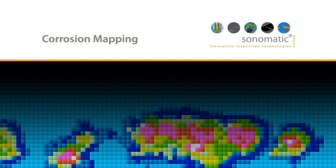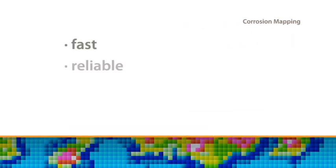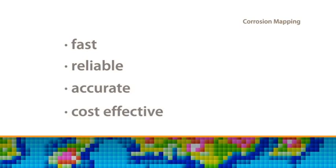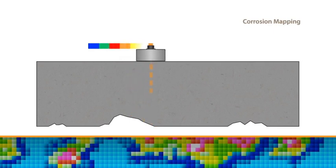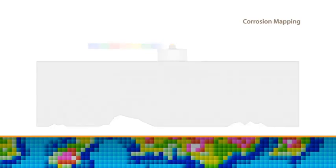Determining whether corrosion exists and how extensive it is inside pipes or vessels is paramount to the integrity and safety of oil and gas operations. Ultrasonic corrosion mapping is a fast, reliable, accurate and cost effective means of ascertaining the integrity of oil and gas pressure systems and structures. The technique allows the detection of reduced wall thickness due to internal corrosion or erosion.